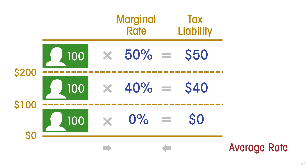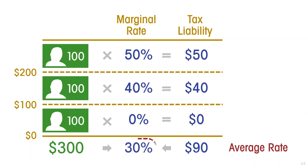And 40% of the second $100, which is $40. That gives a total taxes of $90 on $300 of income, which amounts to a 30% average tax rate.